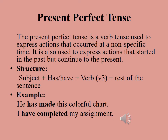The present perfect tense is a verb tense used to express actions that occur at a non-specific time. It is also used to express actions that started in the past but continue to the present. Let us see what is the structure of present perfect tense.